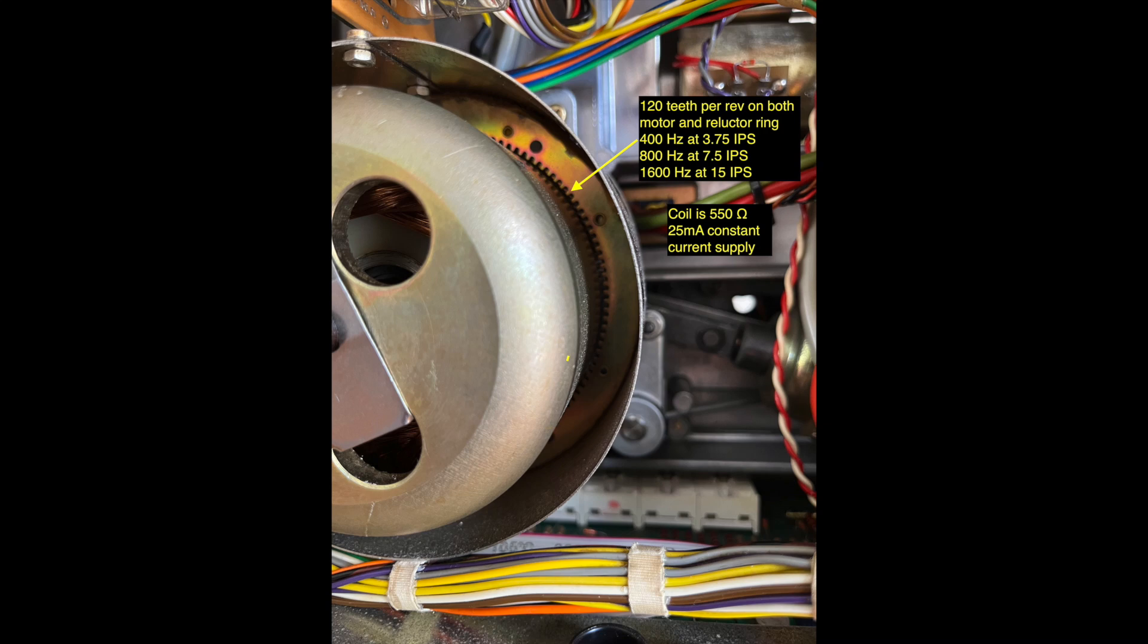The tachometer is an electrically excited variable reluctance, or VR for short, in ring form placed around the motor with internal teeth facing a matching number of external teeth on the motor's rotating outside diameter.